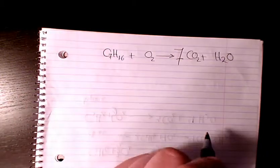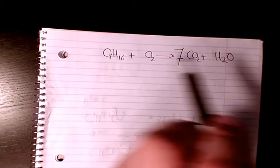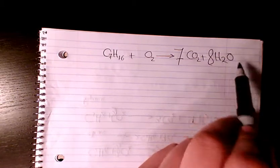We have seven atoms of carbon, so we put seven here. And 16 hydrogen atoms, so we have two here. So if I put eight here it's going to make it eight times two, 16.